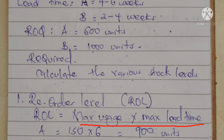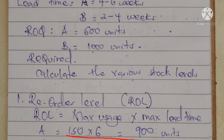The formula for calculating the reorder level is: maximum usage times maximum lead time. For product A, the maximum usage is 150 and the maximum lead time is six weeks (from the four to six week range). So 150 times 6 gives us a reorder level of 900 units for product A.